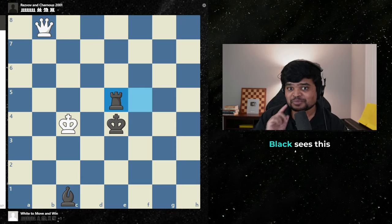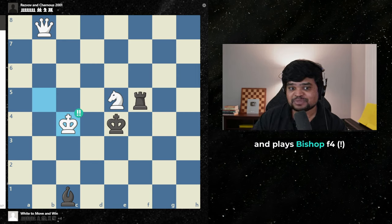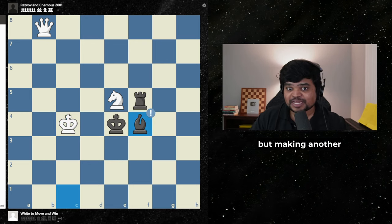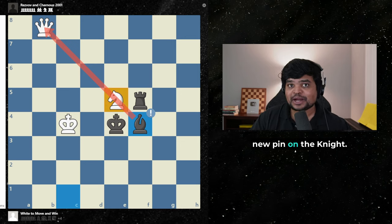But wait. Black sees this and plays bishop f4. It's not only saving the bishop but making another new pin on the knight. This knight is a goner.